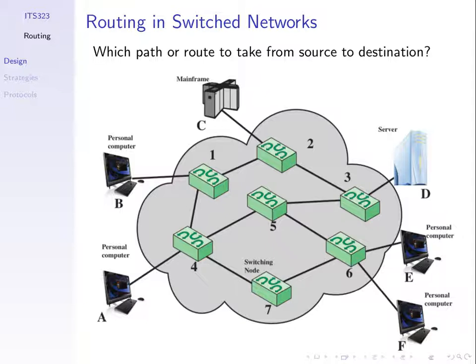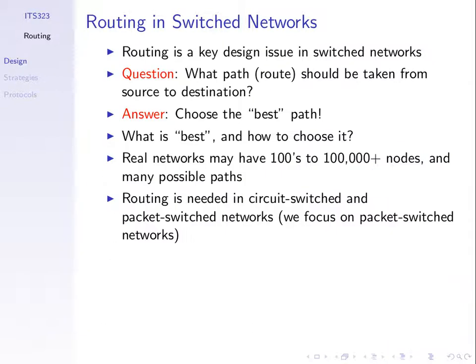It's a problem because there are usually multiple paths to choose from. From A to F, we can go via 4, 7, and 6; or 4, 5, 6; or 4, 1, 2, 3, 5, 6. Since there are multiple paths, we should choose the one which is best. We'll call it a path or a route — they mean the same thing. This is an important issue in data networks.